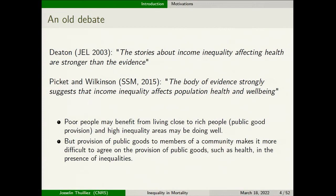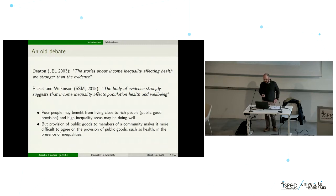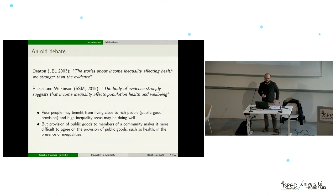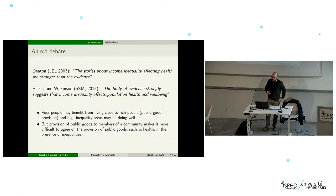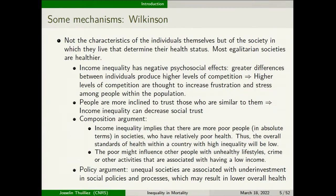This is an old debate. Deaton says the stories about income inequality affecting health are stronger than the evidence, but a well-known paper from Wilkinson and Pickett in Social Science and Medicine surveys a broad number of papers and argues there is strong evidence that income inequality affects population health and well-being. The basic two arguments are: poor people may benefit from living close to rich people because of public good provision, and high inequality areas may have difficulty agreeing on the provision of public goods such as health.